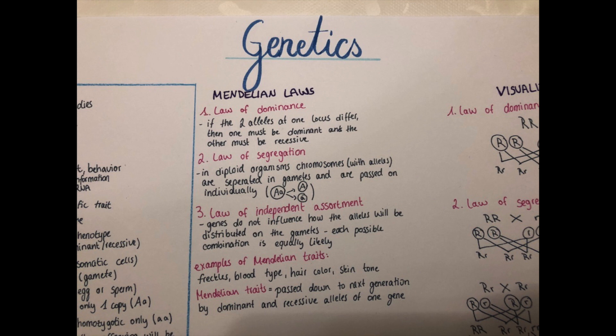And then the next question is what are Mendelian traits? So what can we use these laws for? In humans, those are a few traits. I will just give a few examples. So freckles are inherited by the Mendelian law, blood type, hair color and skin tone. And the Mendelian traits are those that are passed down to the next generation by dominant and recessive alleles of one gene.